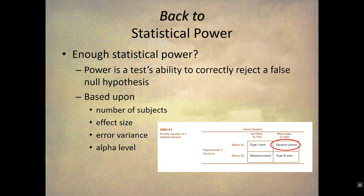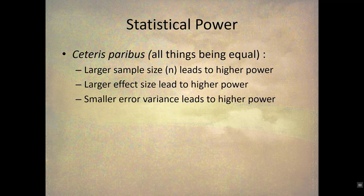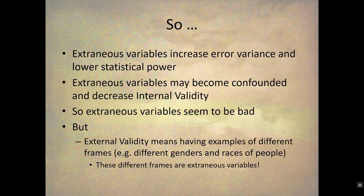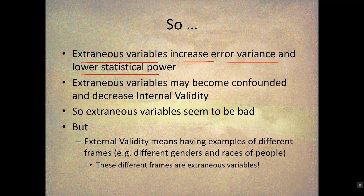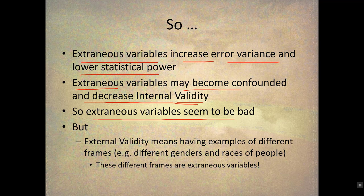Going back to statistical power: larger sample sizes, larger effect sizes, and smaller error variance all lead to higher power. Extraneous variables increase error variance and lower statistical power. Extraneous variables may also become confounded and decrease internal validity. So extraneous variables are bad in multiple ways. However, external validity means having examples of different frames in the experiment — different types of people, genders, races, settings — and these are all extraneous variables. So on one hand extraneous variables are bad, and on the other hand they're needed.